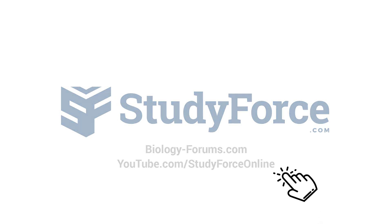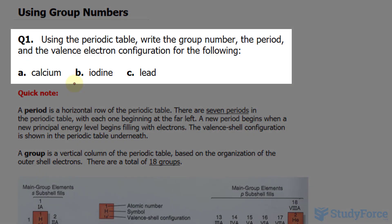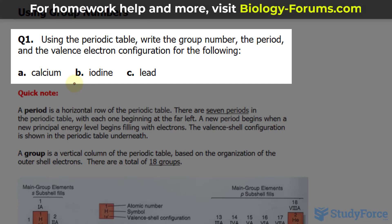In this lesson, I'll show you how to write the group number, the period, and valence electron configuration for elements found on the periodic table. We'll start off with calcium, where in question 1 they ask us the following three things.